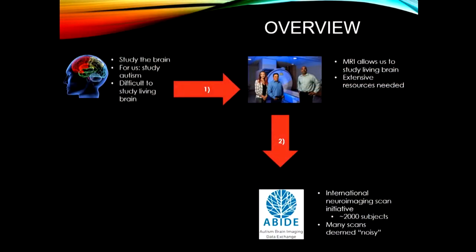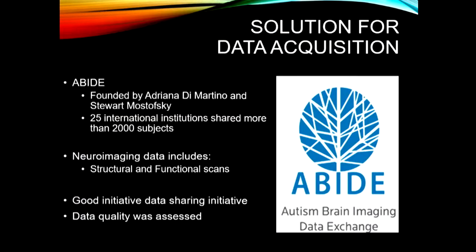In order to solve this low data acquisition issue, we turn to this international neuroimaging dataset known as ABIDE. ABIDE stands for Autism Brain Imaging Data Exchange. It's an international data exchange program created by Dr. Adriana DiMartino and Dr. Stewart Motovski to try to solve this small data acquisition issue. It has 25 international institutions, and there are more than 2,000 MRI subjects who have been diagnosed with autism spectrum disorder, as well as typically developing subjects. These neuroimaging scans contain structural scans, which allow us to see the 3D volume of the brain, and functional scans, which allow us to measure brain activity — so if you tap your fingers, you'll get brain signals pop up, and we're able to detect that.